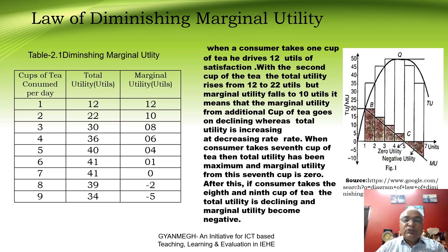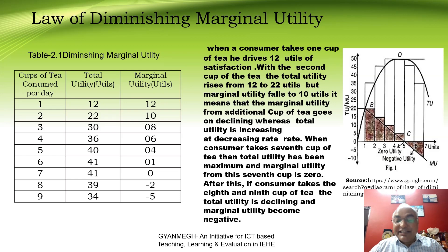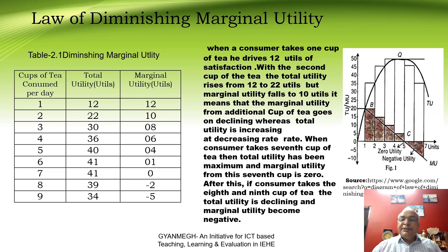When the consumer takes the seventh cup of tea, total utility is at its maximum and the marginal utility from this seventh cup is zero. After that, if the consumer takes the eighth and ninth cup of tea, total utility is declining; therefore marginal utility becomes negative.